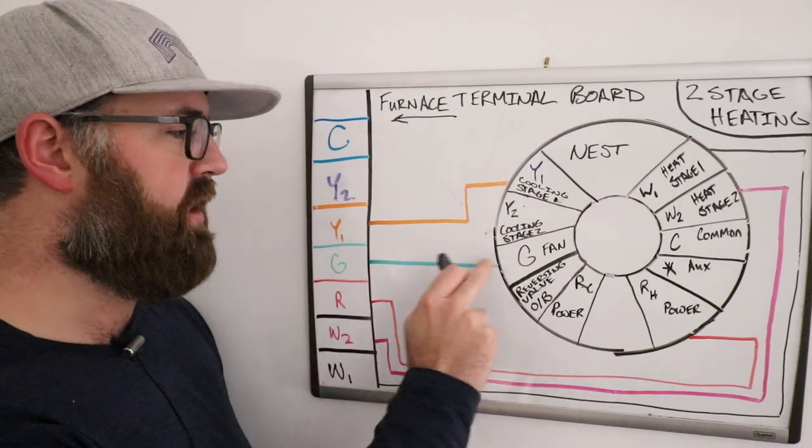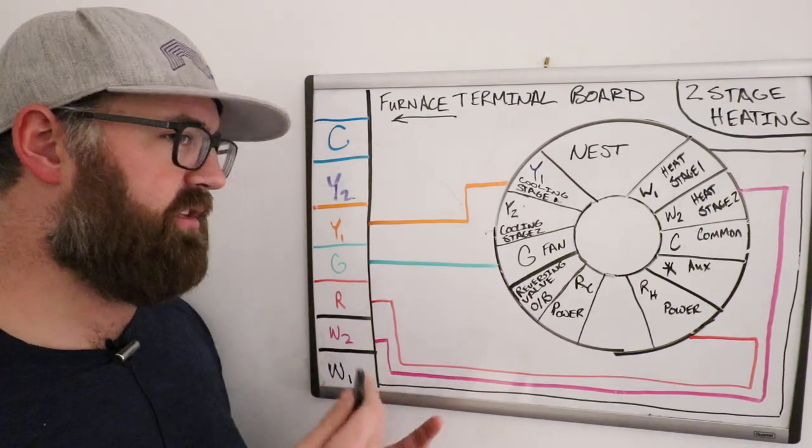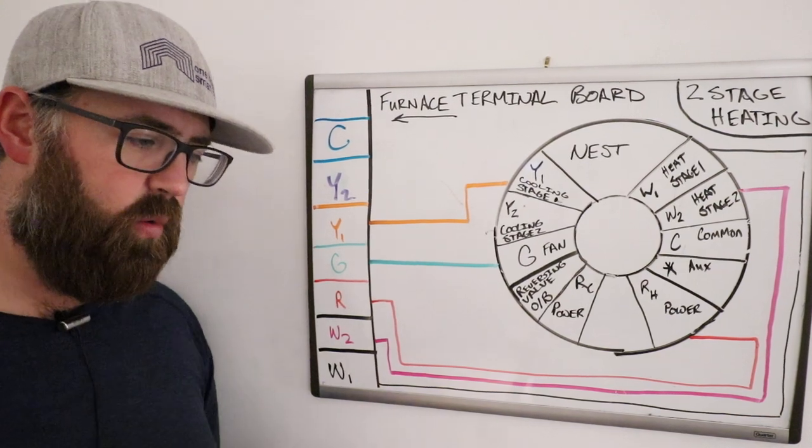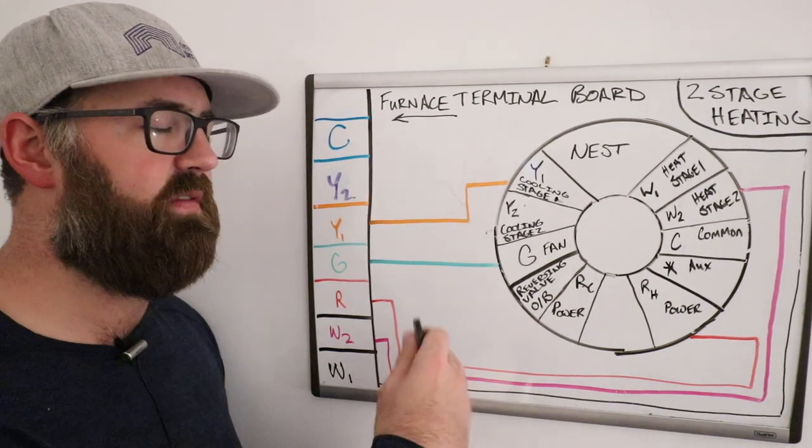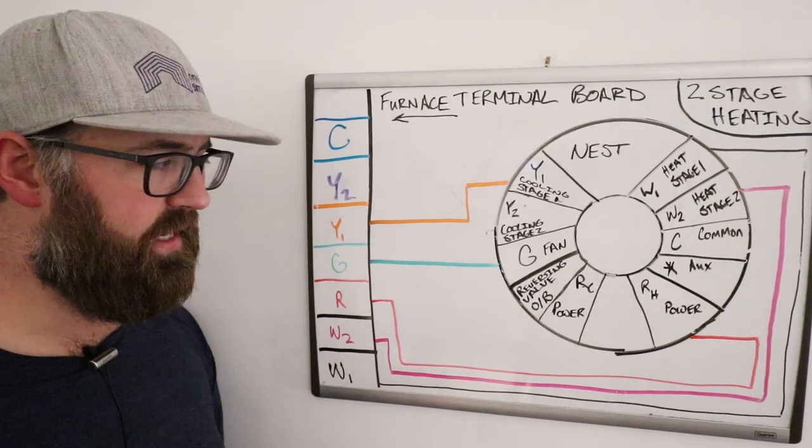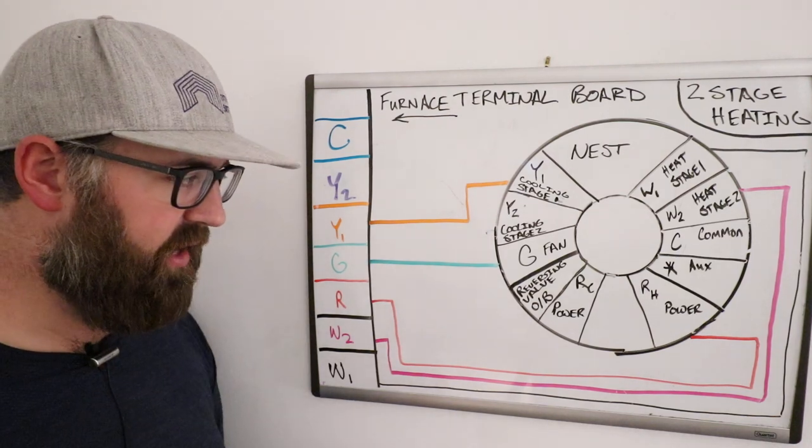The G-wire, that is your fan terminal. And all it does is activate the fan. So with the Nest, it allows you to turn on the fan. Even if you don't have heating and cooling on, it is a nice feature. And that is what the G-wire does.